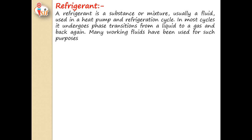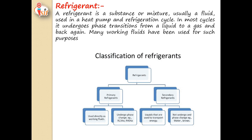First, we will look at refrigerants. A refrigerant is a working substance used in refrigeration and air conditioning systems. It is a substance or mixture, usually a fluid, used in heat pump and refrigeration cycles. In most refrigeration cycles, it undergoes phase transition from liquid to gas and back to liquid. Refrigerants must undergo phase transformation, absorbing latent heat from the object to be cooled.